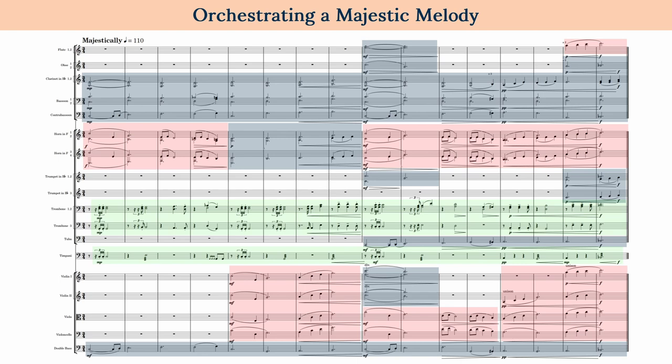Alright, so I think that's it for this one — three different orchestrations: small, medium, large. As always, there are a million ways to orchestrate any one piece of music, so what I've done here is by no means the only way or even the best way, but hopefully I've shown an approach to creating orchestral textures when all you have to start with are melody and chords. I'll be doing more of these videos soon, using melodies that others have written for me, so I hope my patrons will send me more examples. Thanks so much for watching, I hope you've enjoyed it, and see you next time.